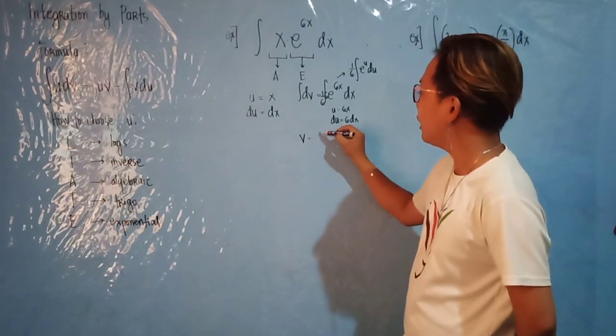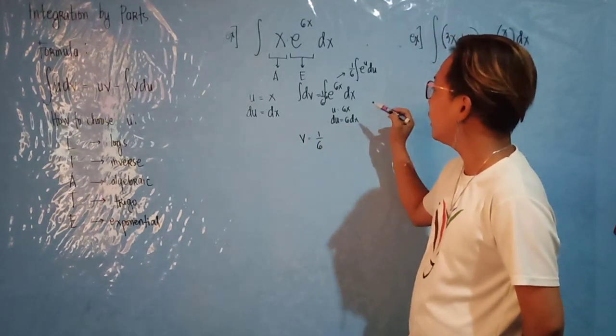Now your v is simply 1 over 6, then e raised to u, which is e raised to 6x.